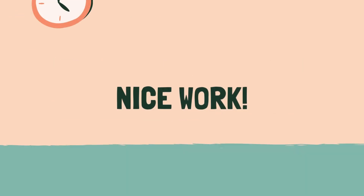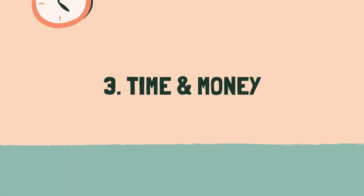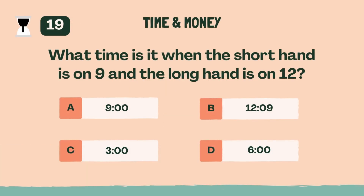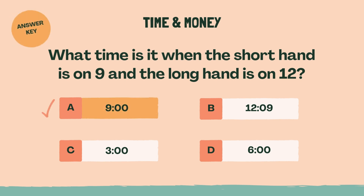Nice work. Time for the next category. Category 3: Time and Money. What time is it when the short hand is on 9 and the long hand is on 12? The answer is A, 9 o'clock.